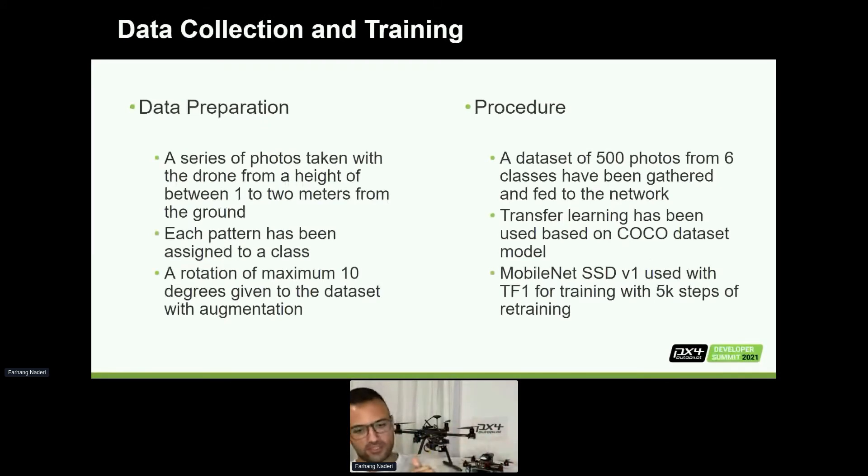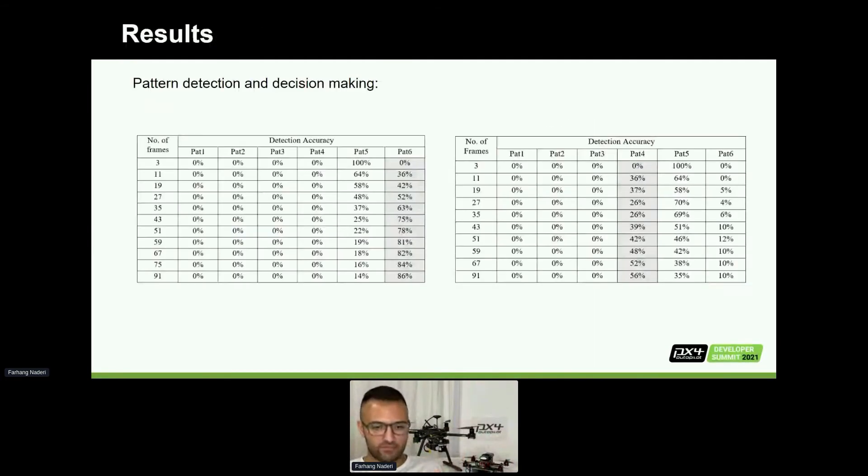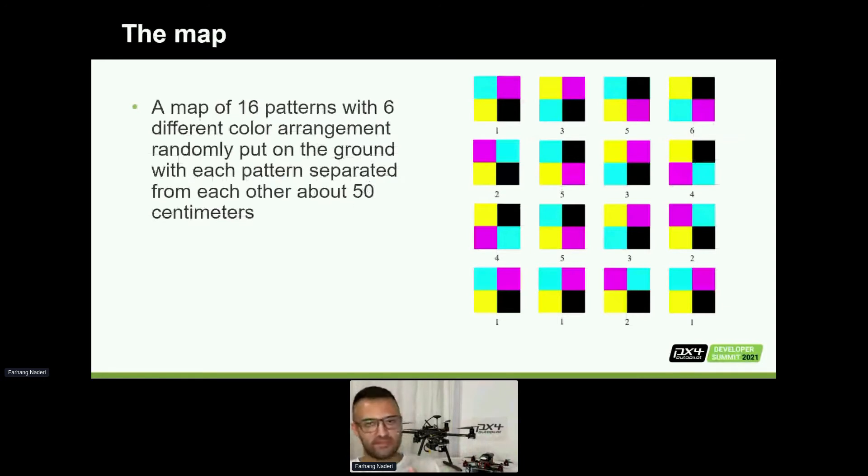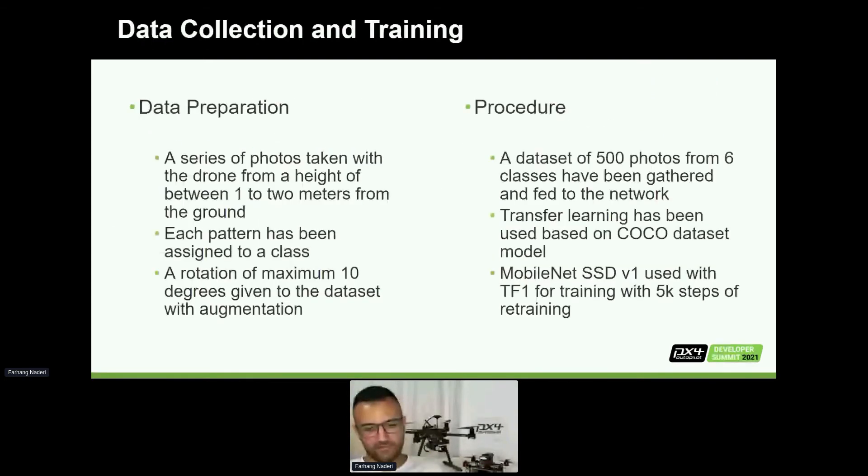How we have done the data preparation and whole procedure: we have six patterns, which means six different classes. We took 20 to 30 images from each one, augmented them, and edited some of them. This means we expanded our dataset to nearly 500 photos. We fed them to our network to be trained with 5,000 steps using SSD v1, just by following the documentation from Coral and using TensorFlow 1. Rotation and augmentation have been applied to the patterns to increase accuracy.